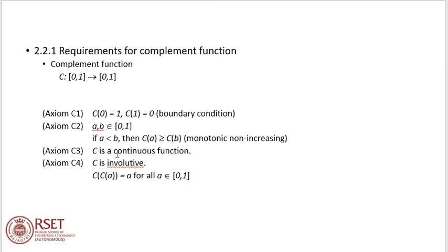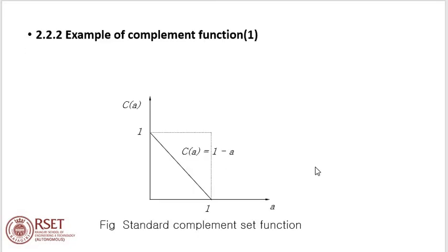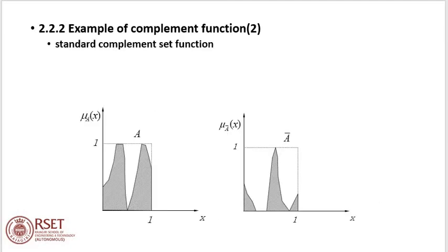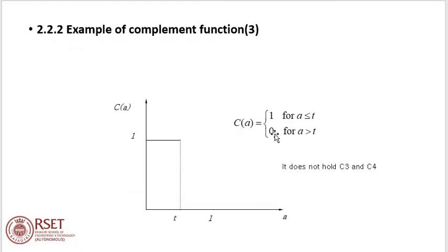Axiom C3: C is a continuous function. Axiom C4: C is involutive, that is C(C(A)) = A for all A element of [0,1]. Example: C(A) = 1 minus A. This is the standard complement function. In another example, C(A) = 1 for A less than or equal to t, and 0 for A greater than t.